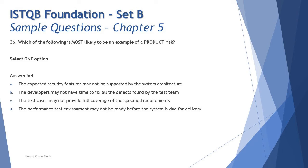Project risk is a pre-release risk — it happens while we are making the product, during the activities throughout the software development life cycle. Product risk impacts the end user. So: project risk impacts the process, and product risk impacts the end user. With these points in mind, let's look at the options.